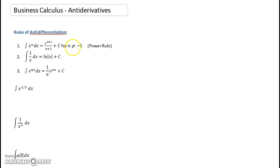This is true for every n distinct from negative 1. Whenever you have n equals negative 1, then you would have to go to the next rule, which x to the negative 1 becomes 1 over x, and that would give you the antiderivative natural log of the absolute value of x plus C. And lastly, the antiderivative of the exponential is going to be 1 over a, e to the ax, plus C.